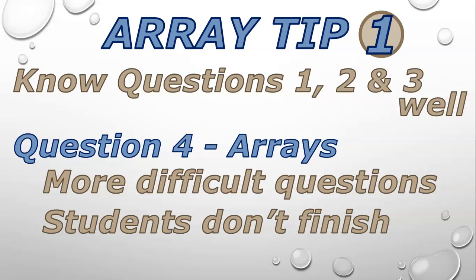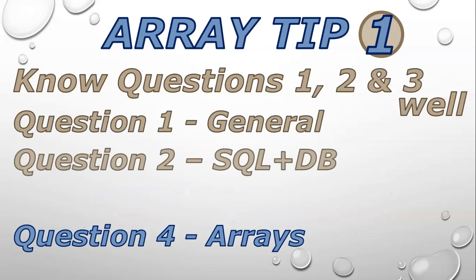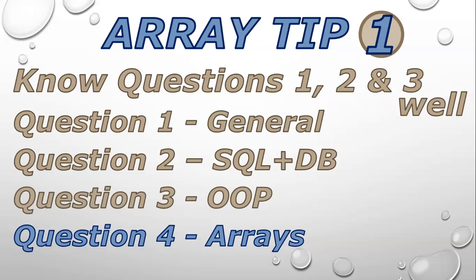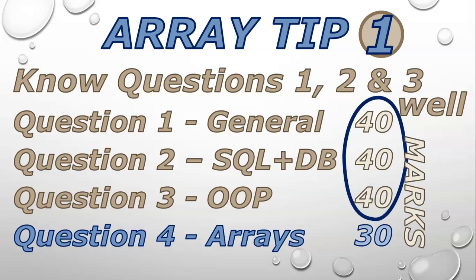So in order to do better at question four, we need to focus on questions one, two, and three, which are the general question, the SQL and database question, and the OOP question. These questions tend to be about 40 marks each, and the array question tends to be 30 marks. If you know your work well for questions one, two, and three, you can get the majority of those marks, which takes a lot of pressure off how many marks you need for the last 30. So make sure that you know that work well.